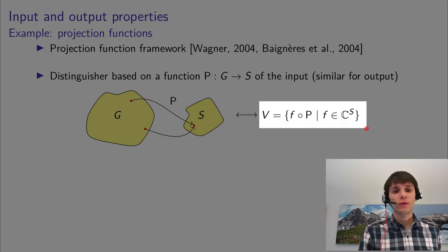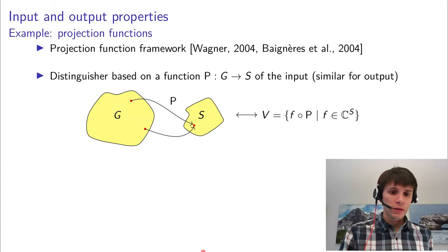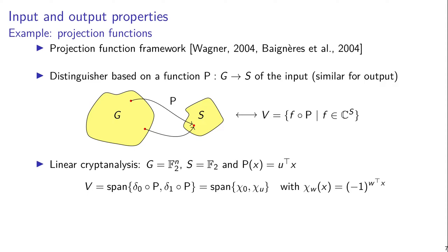Just to illustrate what that means, let's take a look at the case of linear cryptanalysis. So in linear cryptanalysis, P is a Boolean function — a linear Boolean function from F2 to F2. And then this V is just a span of delta 0 and delta 1 composed with P. So this for the input property, for example, means that we can apply both the sets where P evaluates to 0 and the sets — a hyperplane and then the complement of that set — can both be applied to the cipher.